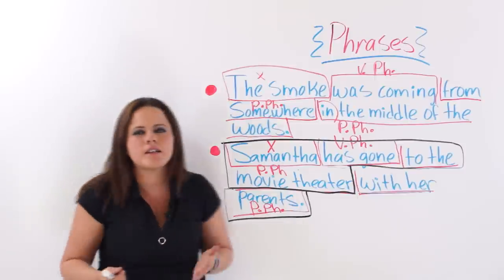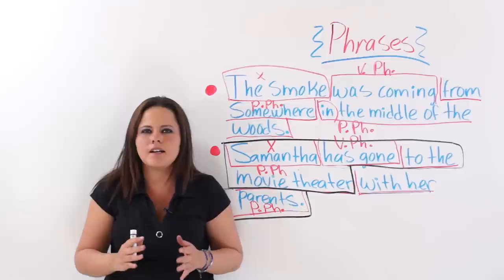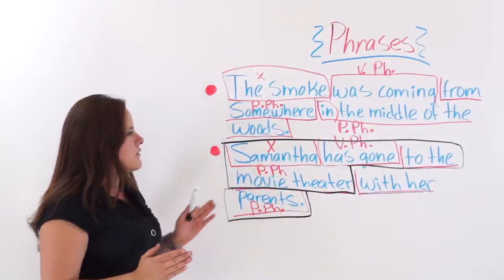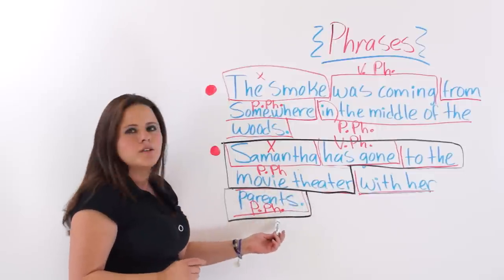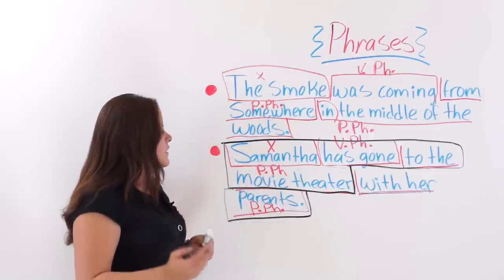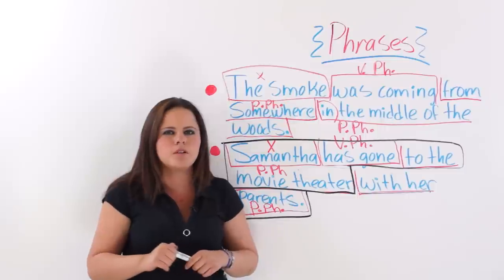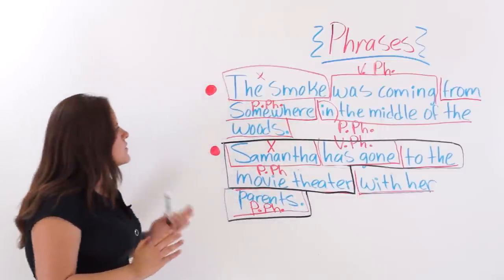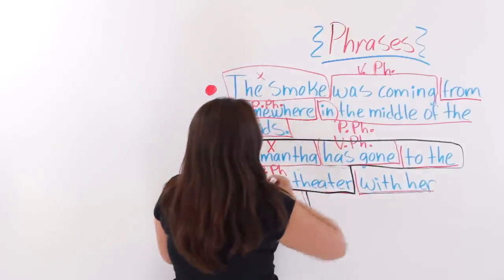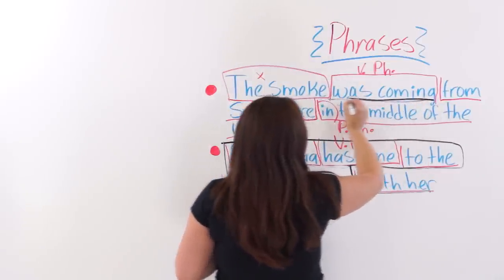A clause has a verb and a subject, and a phrase does not have a verb or a subject. So we have dependent clauses — 'with her parents', you need something else to complement it to understand it — and independent clauses, like 'Samantha has gone to the movie theater', which alone can make one full sentence. Phrases are kind of like incomplete thoughts.